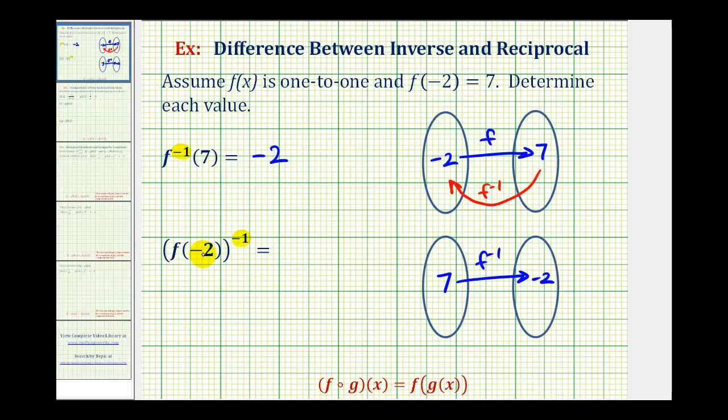And then for our second example, we first need to find the value of f(-2), which is given, it's equal to positive seven. So this is equal to seven raised to the power of negative one.